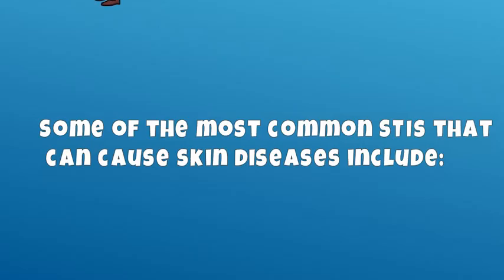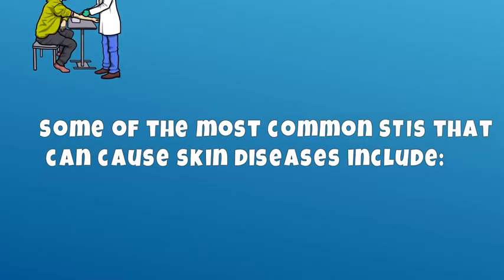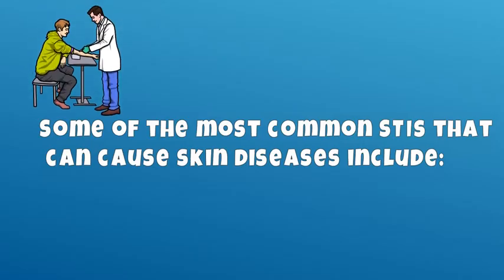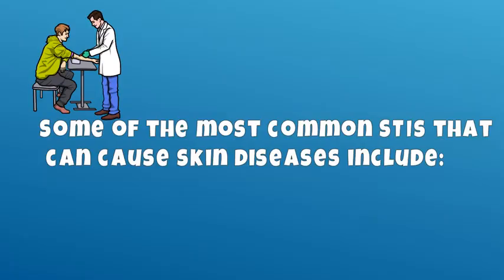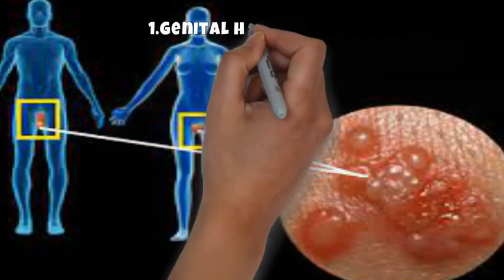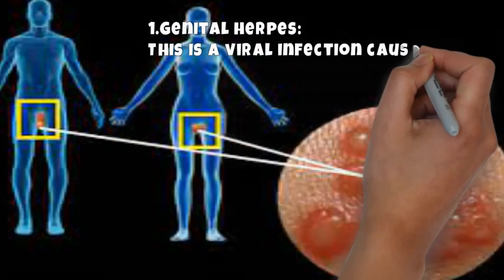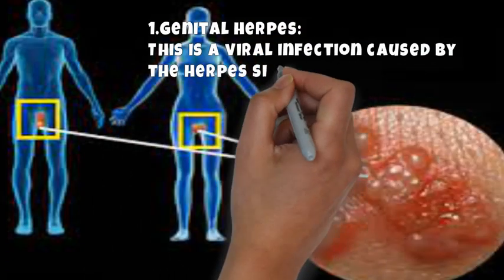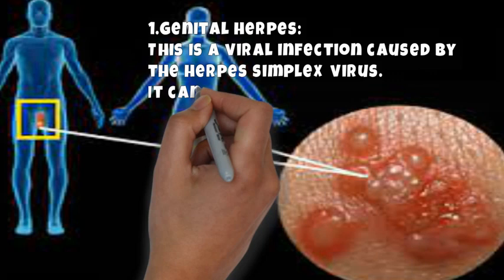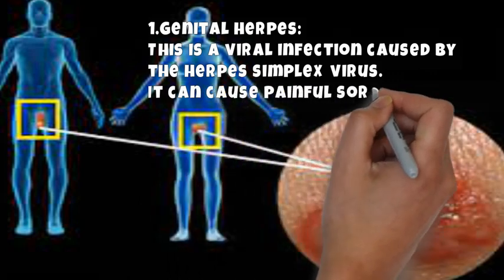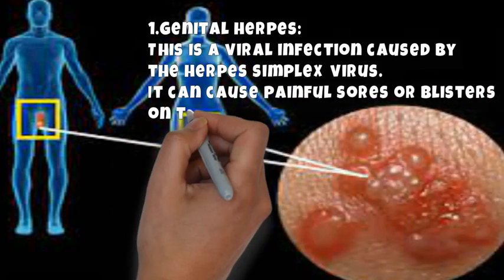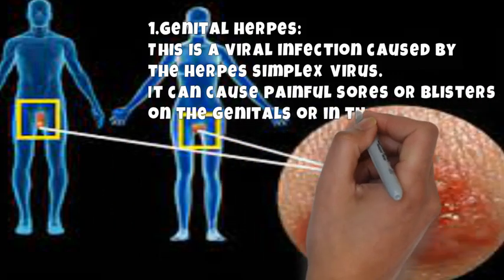Some of the most common STIs that can cause skin diseases include genital herpes. This is a viral infection caused by the herpes simplex virus. It can cause painful sores or blisters on the genitals or in the anal area.